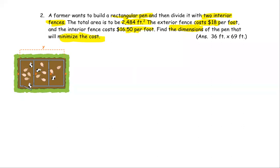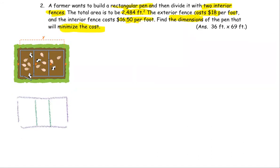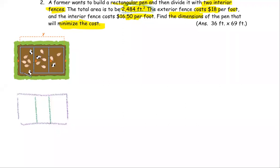From the diagram, the whole pen is in a rectangular shape and there is the exterior fence and the interior fence. The interior fence is shown in green. The total area is the condition for this problem — the total area is going to be 2,484 square feet. We're going to use that at some point.